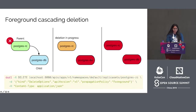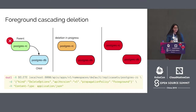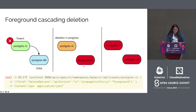Using the same example, let's delete Postgres-RC with the propagation policy set to foreground. First, the object Postgres-RC will enter a deletion-in-progress state. In this state: the object is still visible via the REST API, the object's deletion timestamp is set, and the object's metadata.finalizers contains the value foreground-deletion. Once the deletion-in-progress state is set, the garbage collector deletes the object's dependents — that is, Postgres-DB. Once all blocking dependents are deleted, the garbage collector will delete the owner object, Postgres-RC.